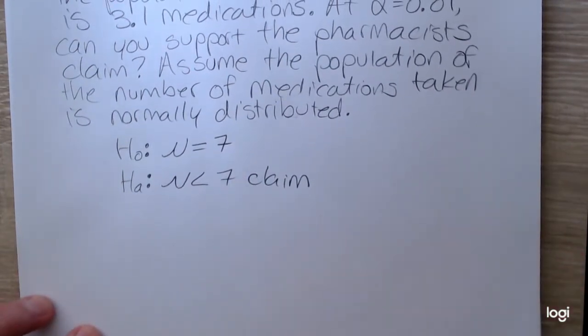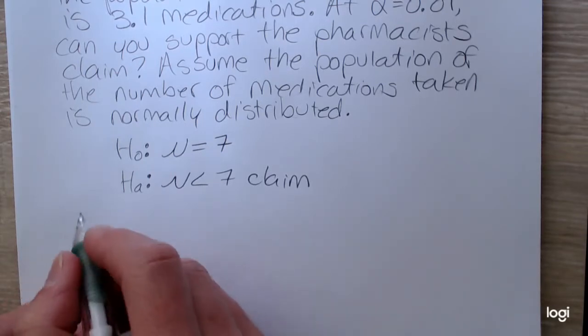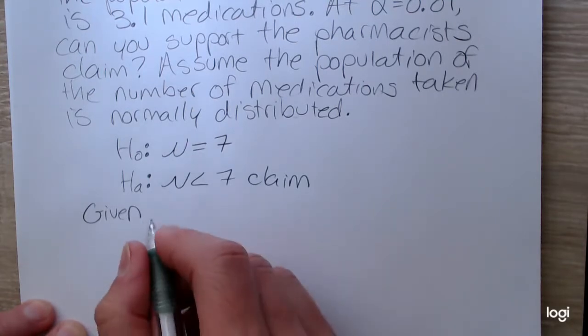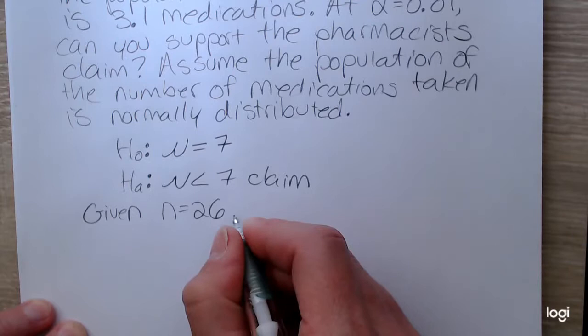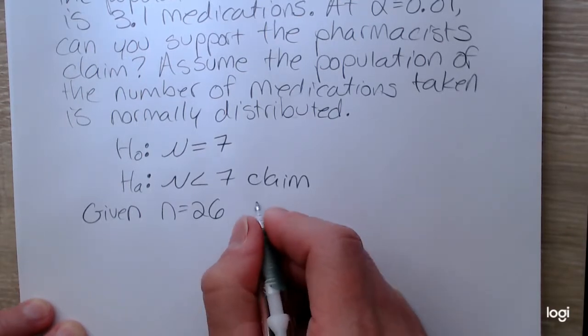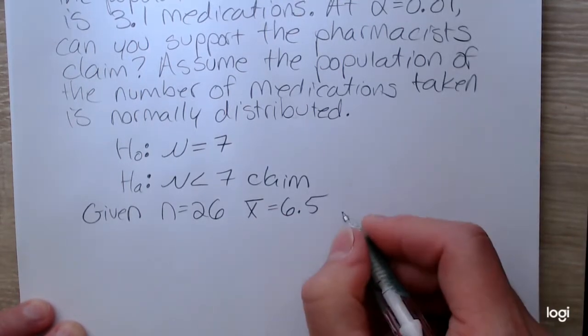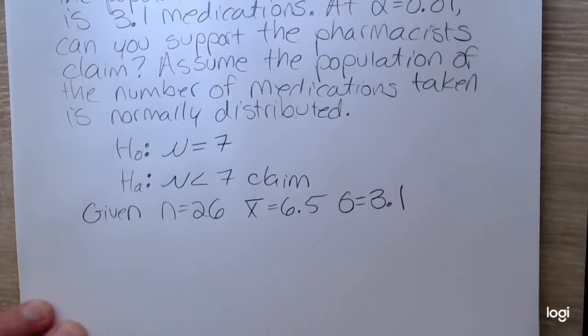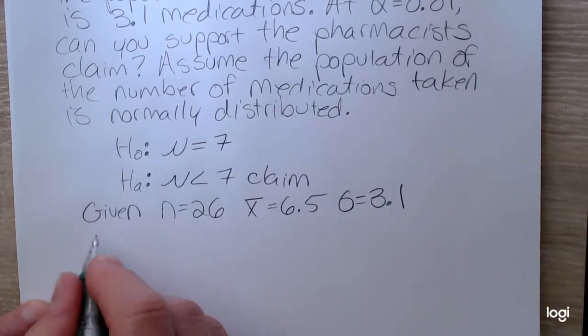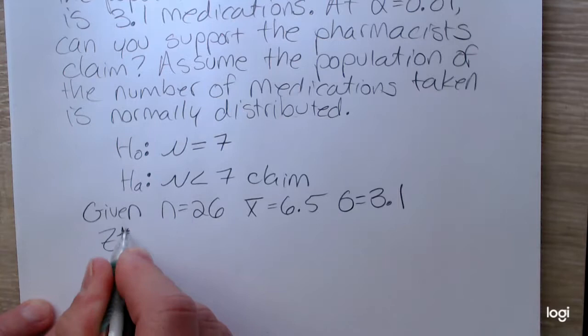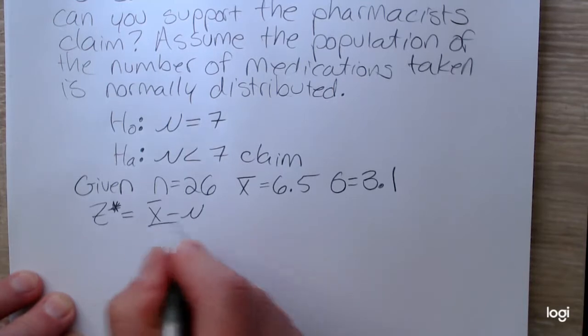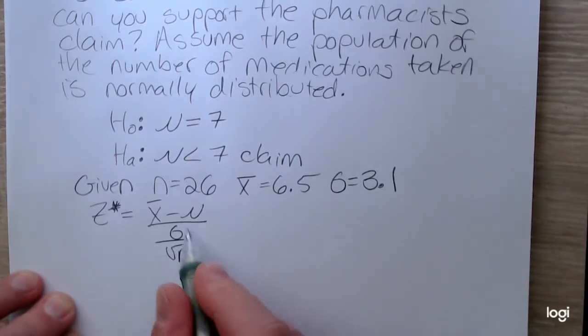Now we need to write down the pieces that are given so we can construct our standardized test statistic. We're given that the sample size was 26. And from that sample, the sample mean was 6.5. And our assumed population standard deviation sigma was 3.1. So I can construct my standardized test statistic. It is going to be a z-score using the formula x-bar minus mu over sigma over the square root of n. This is the standard error of the mean from the central limit theorem.